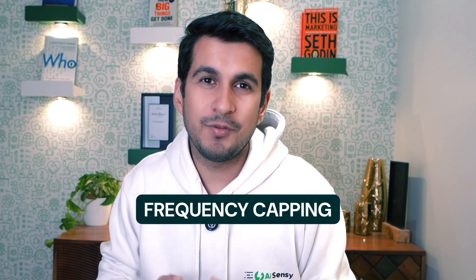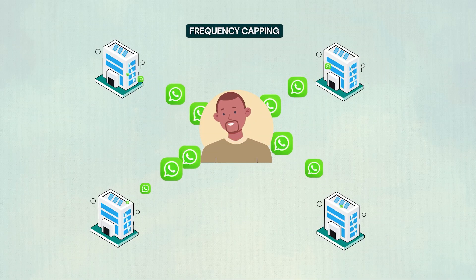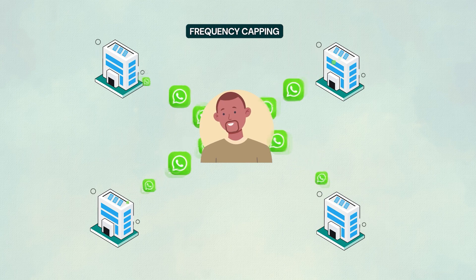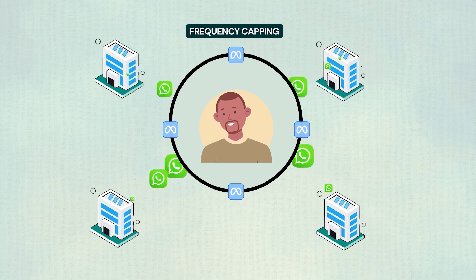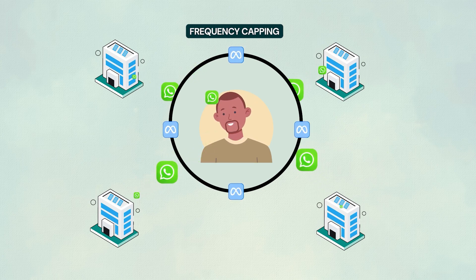Let's understand Frequency Capping before we get into Retry Campaign. Frequency Capping is a delivery limitation introduced by Meta so that a user is not getting spammed by multiple businesses at the same time or on the same day. Meta's Frequency Capping means you cannot send messages to 100% of users — messages are mostly delivered to people who are more likely to respond or who have previously opened your messages on WhatsApp. Typically a broadcast achieves 50–70% delivery rates due to Frequency Capping.